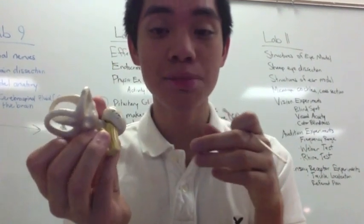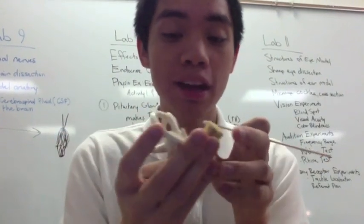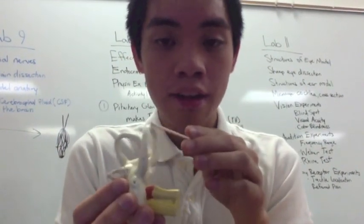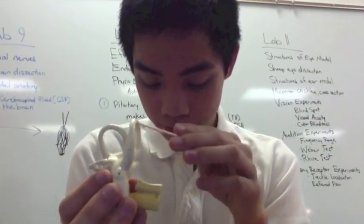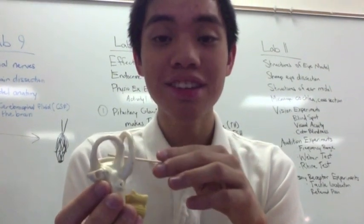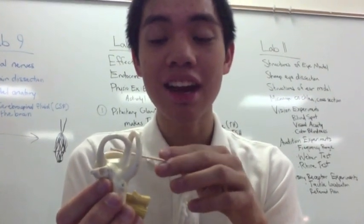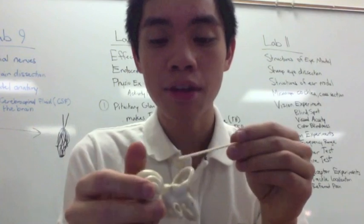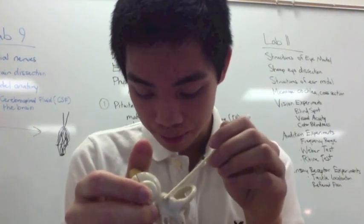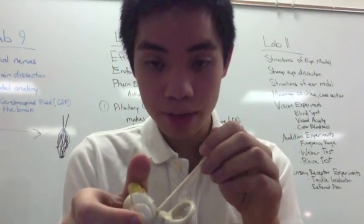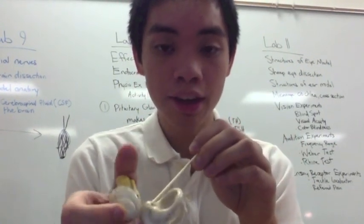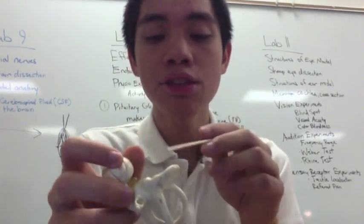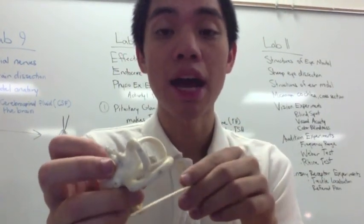Next you have your inner ear. You have the semicircular canals, which are these little loops right here. And you also have your vestibule, which is this middle area right here. These two structures help with balance.